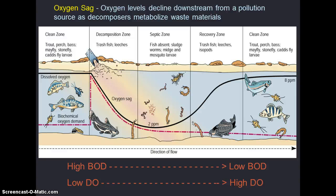While some naturally low oxygen environments exist, such as wetlands, which are abundant in organic matter and bacteria, water with an oxygen content greater than 5–6 ppm will generally support desirable aquatic life. Biochemical oxygen demand, or BOD, is the amount of dissolved oxygen consumed by aquatic microorganisms in degrading organic matter. The graphic here depicts what is known as an oxygen sag curve. Oxygen levels decline downstream from a pollution source as decomposers metabolize waste materials. Given sufficient distance and time, the oxygen level increases once the organic waste has been processed.